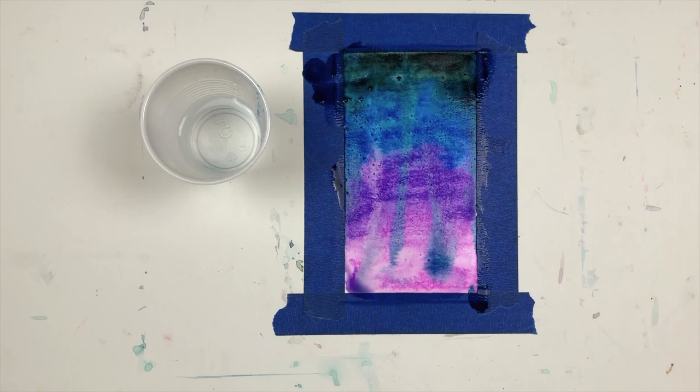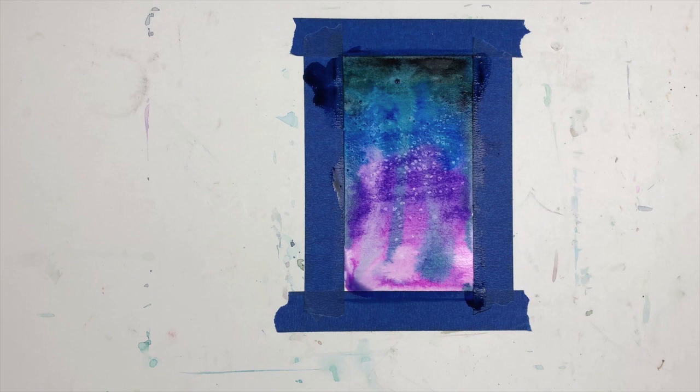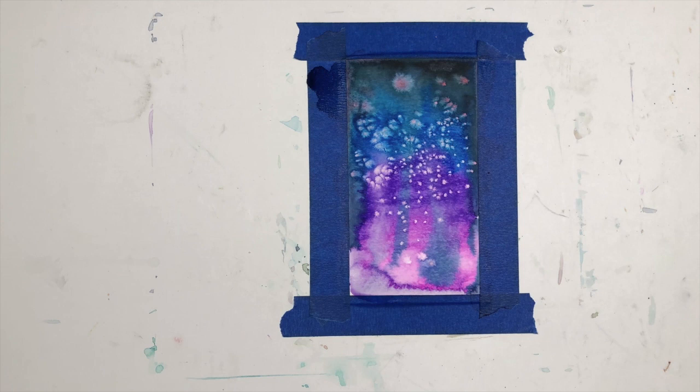Next is the most important step: letting it dry. I let mine dry for about half an hour. You may need more or less depending on the humidity, but the next steps won't work if your painting is still damp, so the longer the better. I did a time lapse of mine so you can see the cool effect you get from the salt and the ink as it dries.